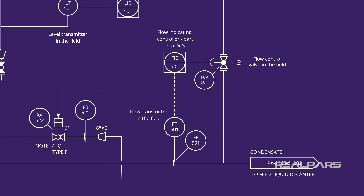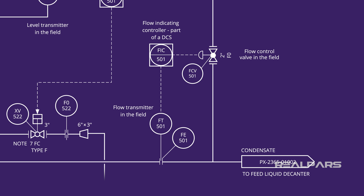Let's take a closer look at the flow control loop. Flow transmitter FT501 sends an electrical signal to the DCS flow indicating controller FIC501, which in turn sends an electrical signal to the operated flow control valve FCV501.